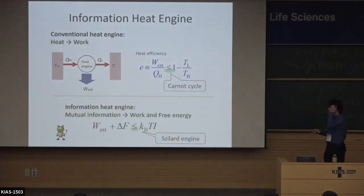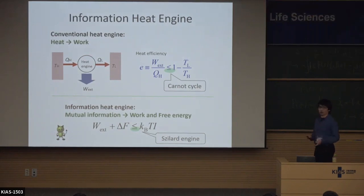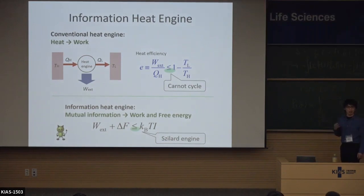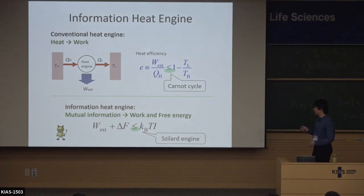Let me talk about some very intuitive meaning of this result. In conventional thermodynamics, for example in the case of the Carnot cycle, work is extracted from heat flow and only a part of the heat flow is converted into work. The upper bound of the conversion is given by the Carnot efficiency, achieved by the Carnot cycle — a reversible heat engine. On the other hand, in the information engine case, the upper bound is given by the mutual information, which means the resource of the work and free energy is given by the mutual information term.